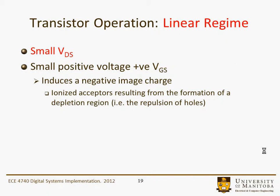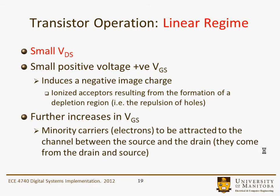For small VDS, with a small positive voltage VGS, we basically induce a negative image charge. The lines of force — positive charge on the gate — end up on negative charges in the channel. Those are the ionized acceptors, and that was basically the result in the formation of a depletion region. That is the repulsion of holes because initially that material was p-type in the channel. Further increases in VGS effectively pull in the minority carriers — these are electrons — and they come into the channel at the source and drain regions.